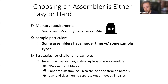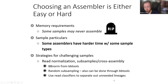Strategies for challenging samples include read normalization — BBNorm from BBTools normalizes reads to make assembly easier by reducing read count fed to the assembler. Random subsampling is also an option, also doable through BBTools. A third option is using read classifiers to separate out unneeded lineages — for example, if you have eukaryotic contamination you don't care about, read-map to a reference, remove those reads, then assemble afterwards to ease the burden on your assembler.